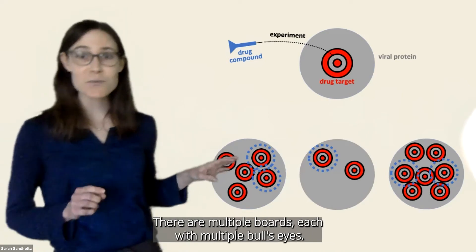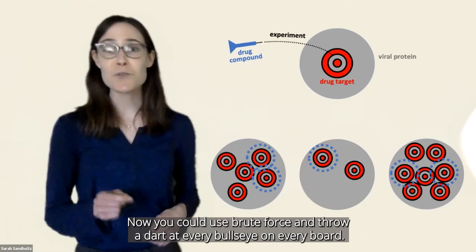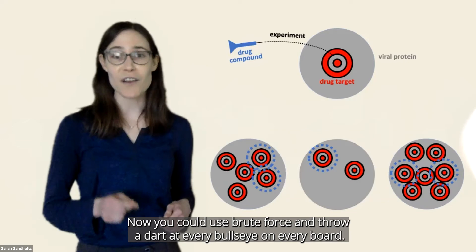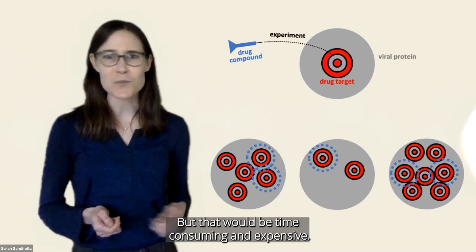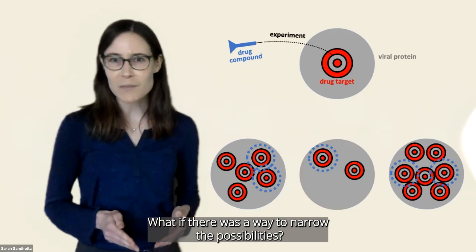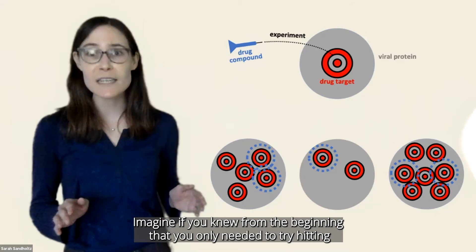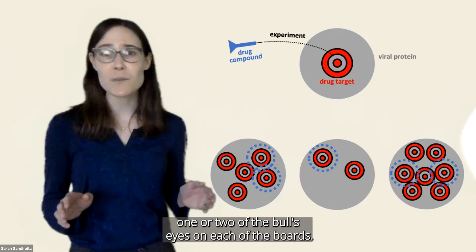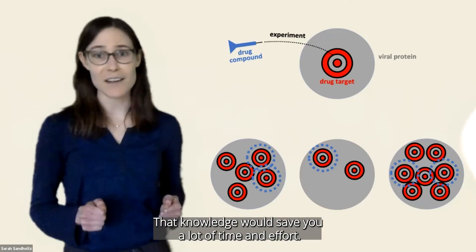There are multiple boards, each with multiple bullseyes. How do you know where to throw your dart? Now, you could use brute force and throw a dart at every bullseye on every board. But that would be time consuming and expensive. What if there was a way to narrow the possibilities? Imagine if you knew from the beginning that you only needed to try hitting one or two of the bullseyes on each of the boards. That knowledge would save you a lot of time and effort.